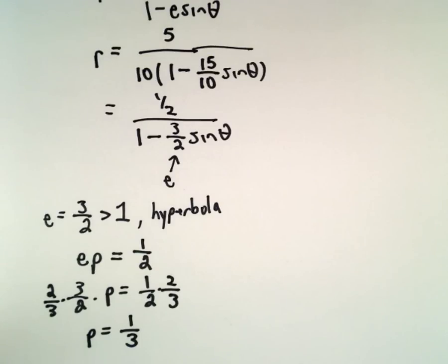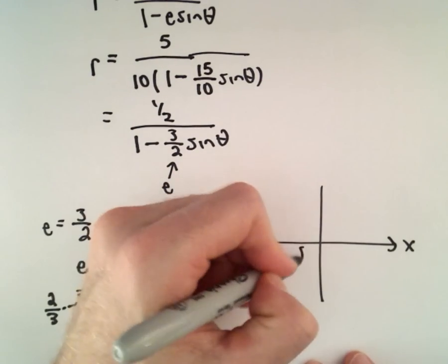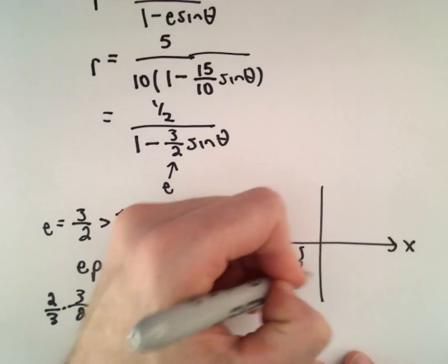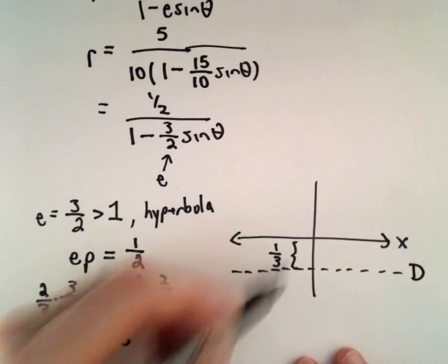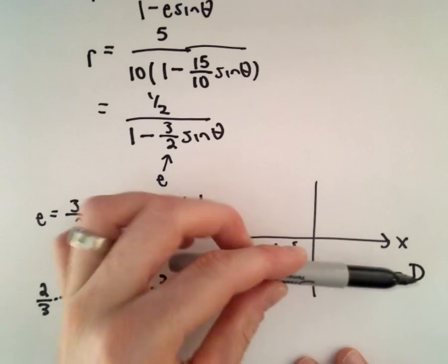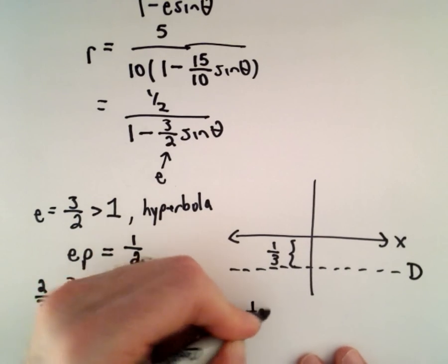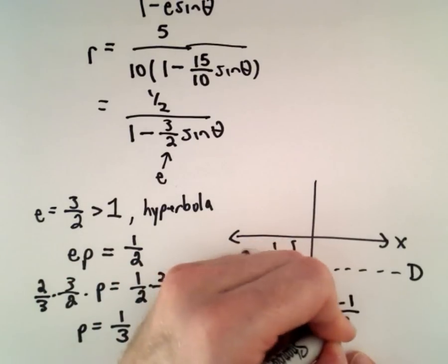For this type of polar equation, we know that the directrix will be p units below and parallel to the x-axis. So there's our x-axis, we go p units down which would be 1 third units down. It's going to be parallel to the x-axis, that's going to be the directrix. Since we're 1 third units down and we have a horizontal line, the directrix would have an equation y equals negative 1 third.